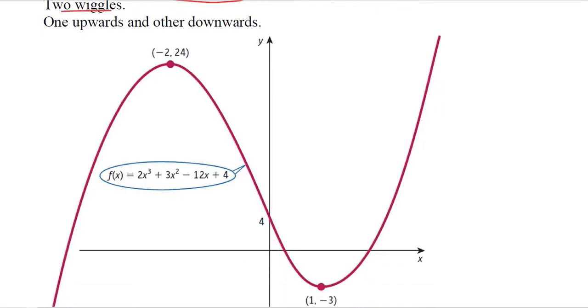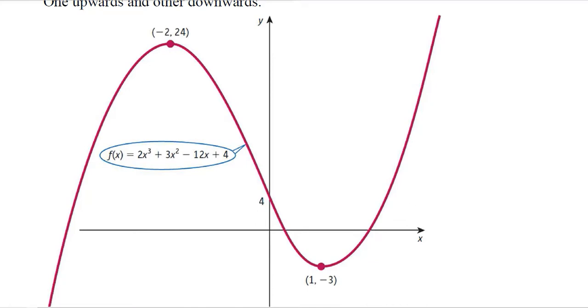You can see that there are two wiggles: first is this wiggle at the top and the other is this wiggle with coordinates (1, -3). One is upwards and the other is downwards. So this is the nature of the cubic function that we have plotted here. However, this wiggle is having a peak point and this is having the lowest point.